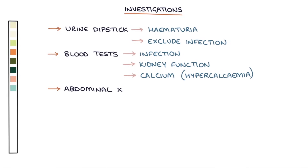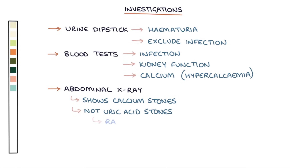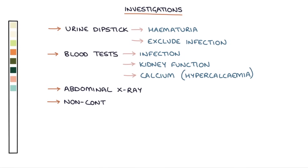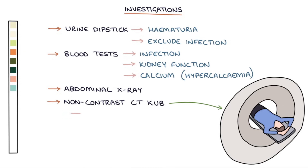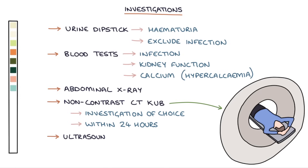An abdominal x-ray can show calcium-based stones, but uric acid stones will not show up — they are radiolucent, meaning they don't appear on x-rays. A non-contrast CT scan of the kidneys, ureters and bladder, called a CT KUB, is the initial investigation of choice for diagnosing kidney stones. The NICE guidelines from 2019 recommend a CT KUB within 24 hours of presentation. An ultrasound KUB is a less preferred alternative to a CT scan.